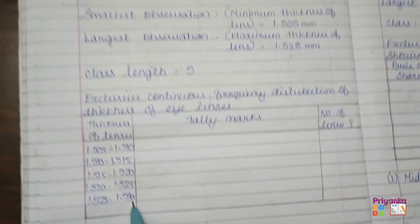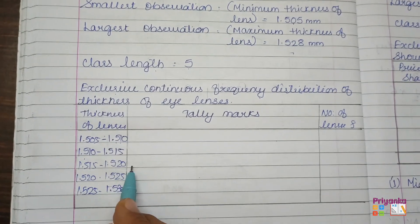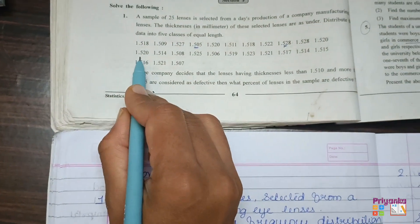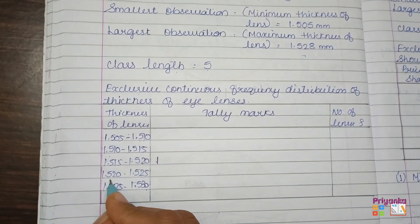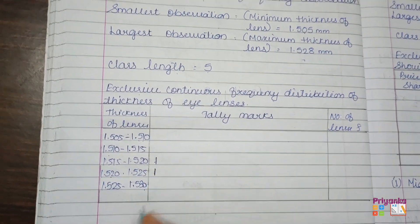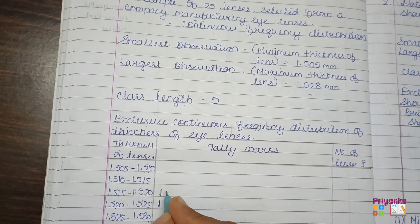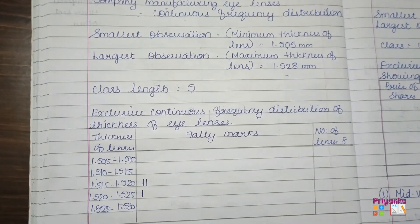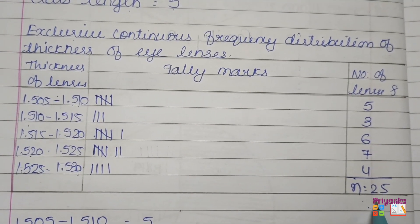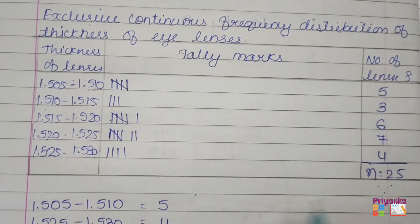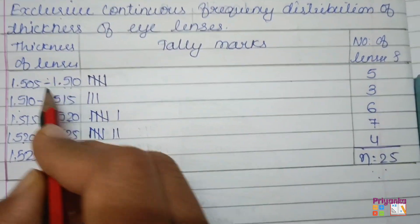We start the tally marking — for example, 1.518 will be covered in the 1.515 to 1.520 class, and 1.516 similarly. After completing the tally marking, we remove the total number of frequencies. Here we found n is equal to 25. In the question, less than 1.510 refers to the first class.